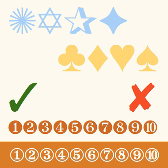When ITC Zapf Dingbats was first announced in U&LC Magazine, Volume 5-2, the family was divided into the 100-series ITC 100, 200-series ITC 200, and 300-series ITC 300. Each series contains 120 symbols.